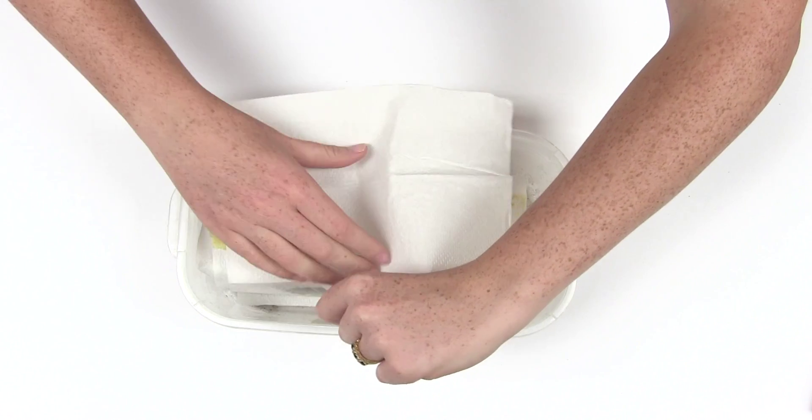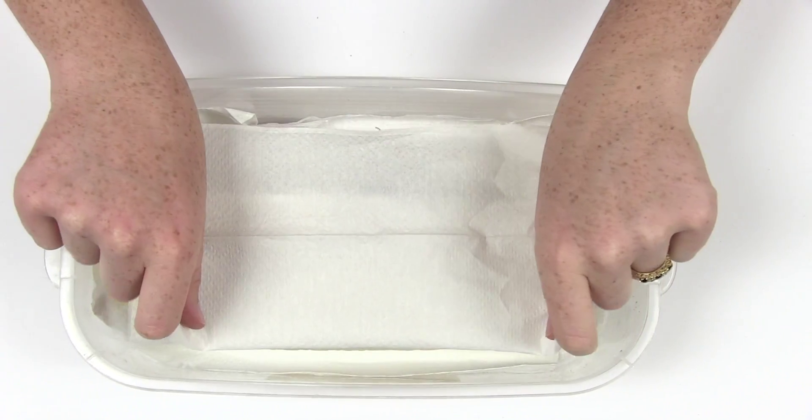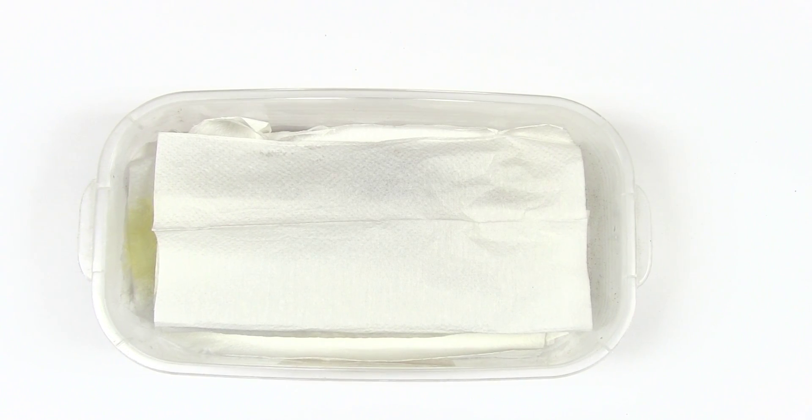Add some more paper towels, then place your insects inside, cover them with another layer of paper towel, and close the lid tightly to keep the moisture in.